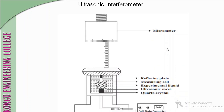This is the schematic sketch of an ultrasonic interferometer. It consists of a base which houses a piezoelectric crystal, followed by a measuring cell in which the given liquid is placed, followed by a micrometer screw which is attached to a reflector plate.